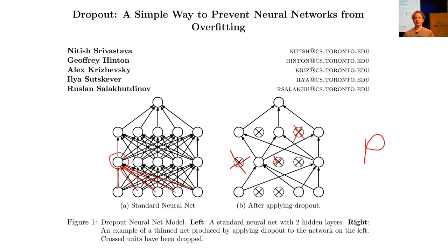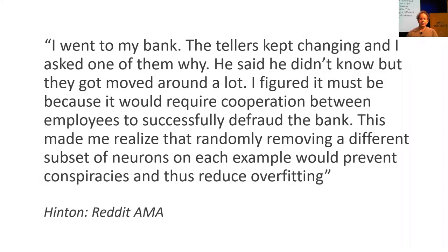Every time I have a mini-batch going through, I at random throw away some of the activations. The next mini-batch, I put them back and throw away some different ones. This means no one activation can memorize some part of the input — that's what happens when we overfit: some part of the model is basically learning to recognize a particular image rather than a feature in general. With dropout, it's going to be very hard for it to do that.